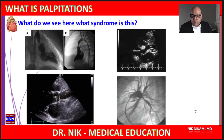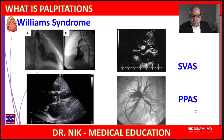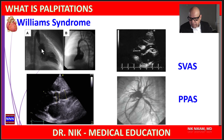Here is a set of images — what do you see, and what is your diagnosis? Please pause the video, come up with your diagnosis, then we will proceed further. This is an example of Williams syndrome. Williams syndrome is characterized by supravalvular aortic stenosis, as you can see here in the angiogram.